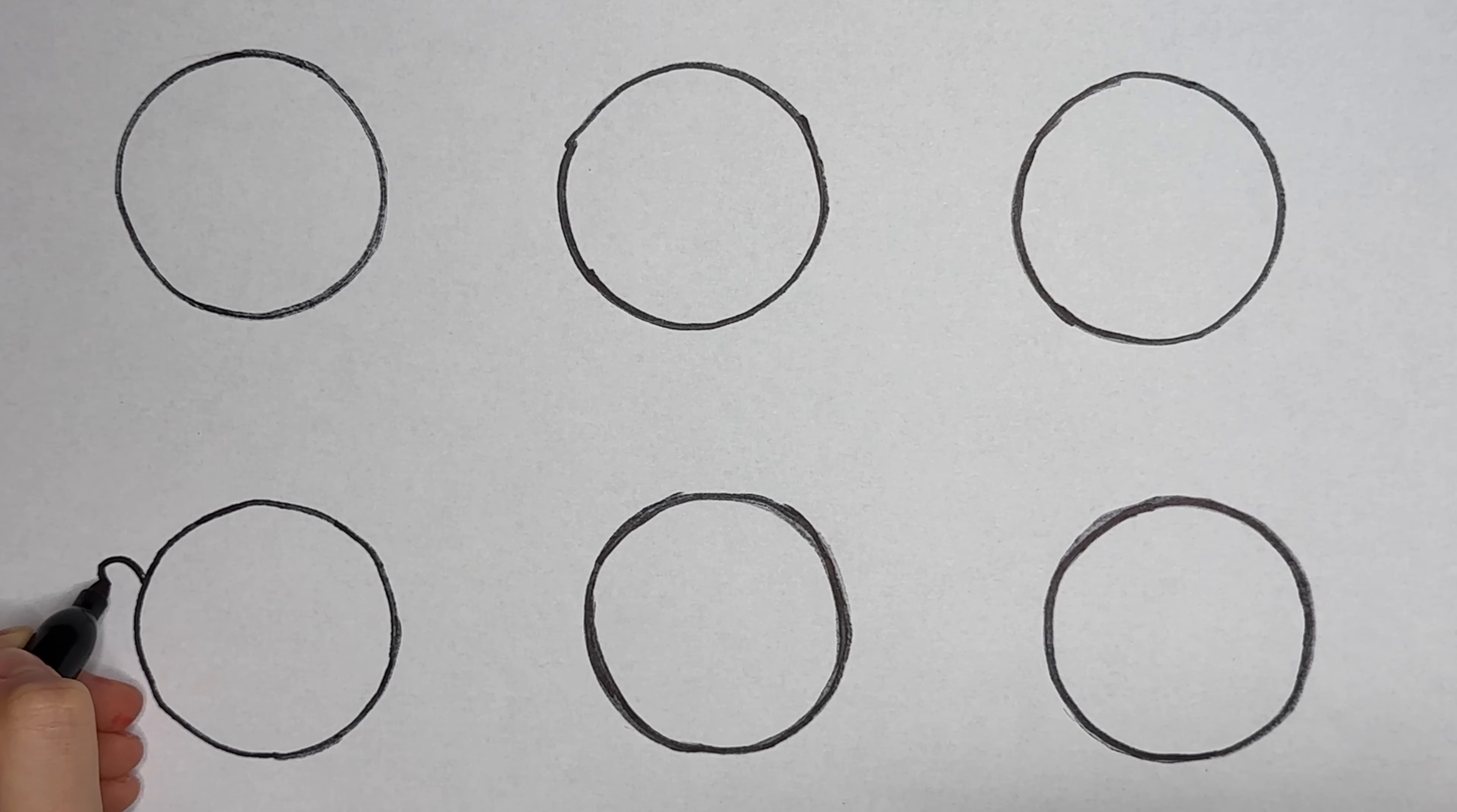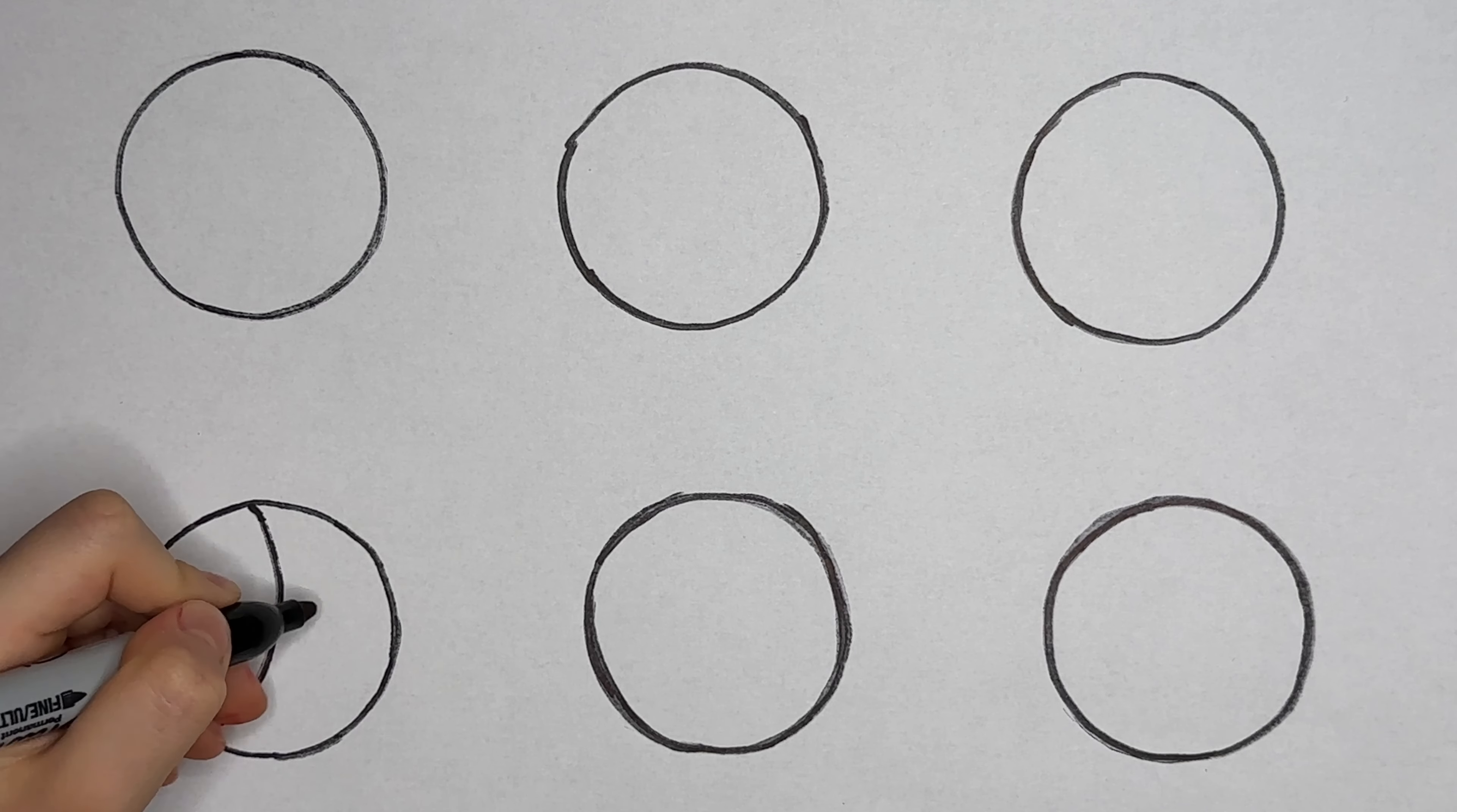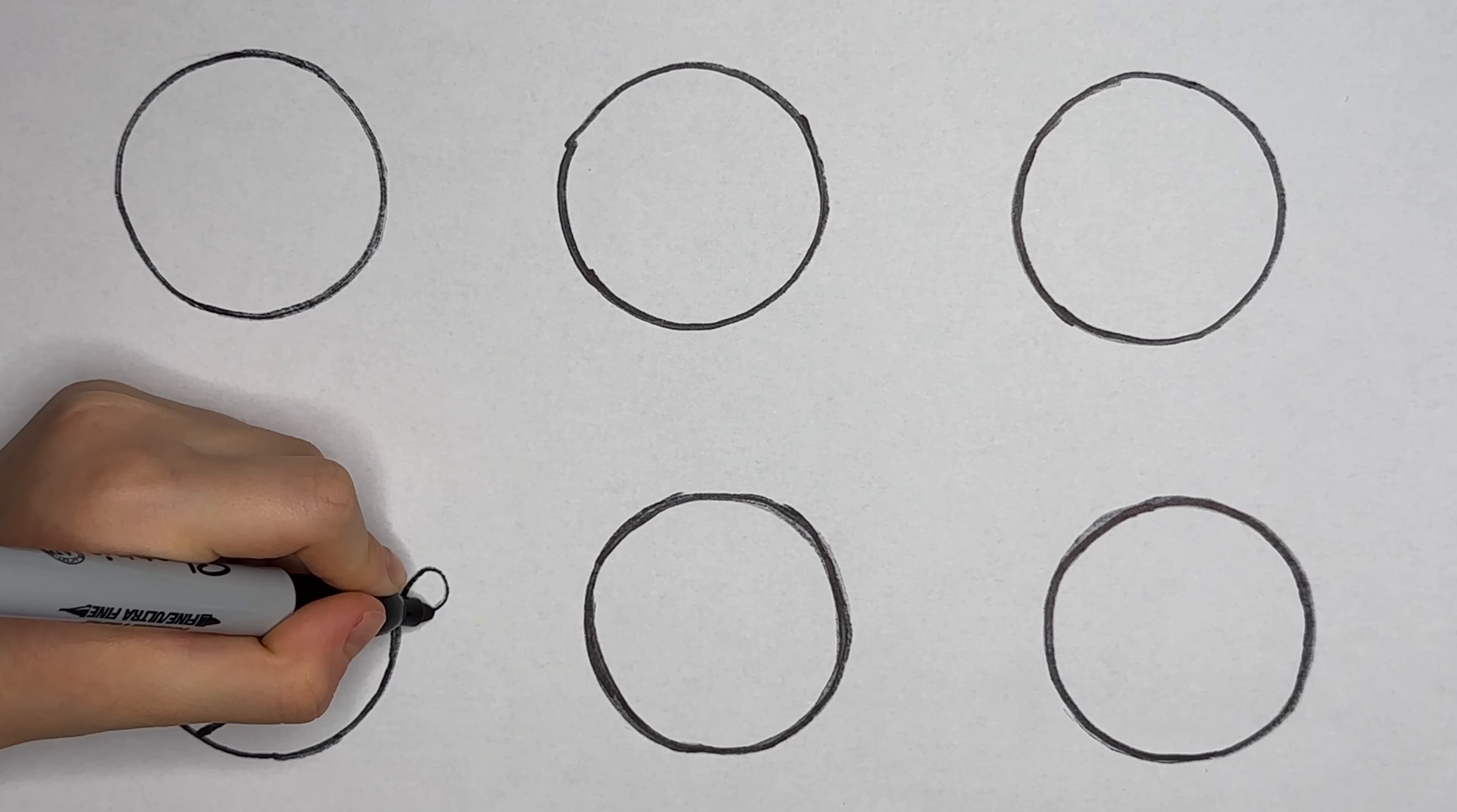This circle is going to be a fish. The mouth is going to be like a small heart. Then we're going to draw a curved line like this. Then it's going to be like this. Just one eye. The tail looks like a heart.